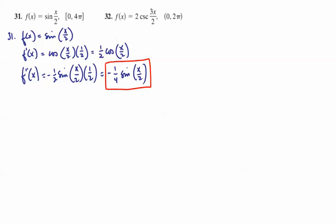Now, we want to set that equal to 0. Negative 1 fourth sine of x over 2 is going to be 0 whenever sine of x over 2 is 0. And sine of x over 2 is 0 at 0 pi, 2 pi, 3 pi, 4 pi, etc.